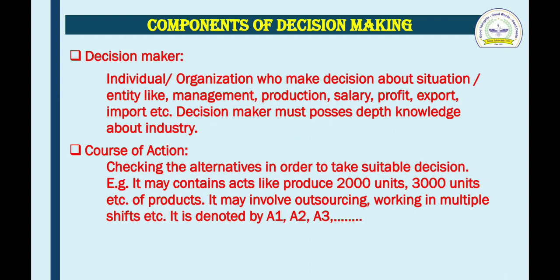Number two: course of action. Course of action means checking alternatives or the information in order to take a suitable decision. We go through all the information available and check by which information we can rely, and take the best suitable decision. For example, it may contain acts like producing 2000 units or 3000 units of a product. Depending on their needs and necessity, the company will decide how much to produce. It may also be about outsourcing or working in multiple shifts. Course of action is denoted by A1, A2, A3, and so on.